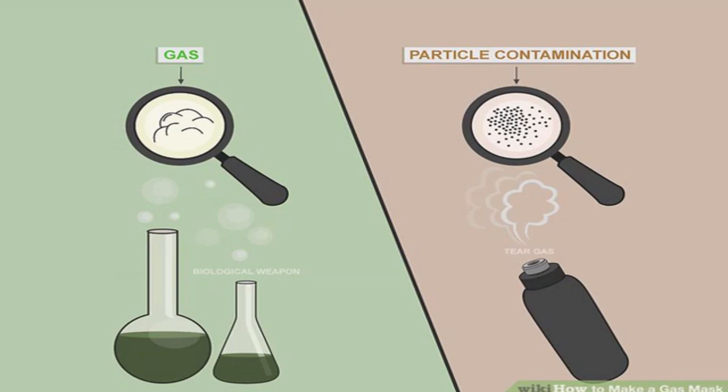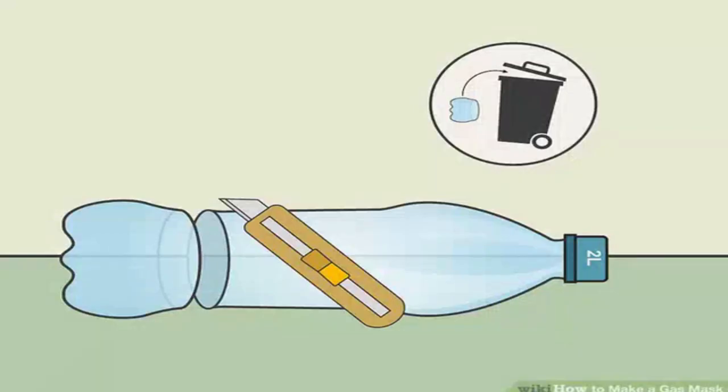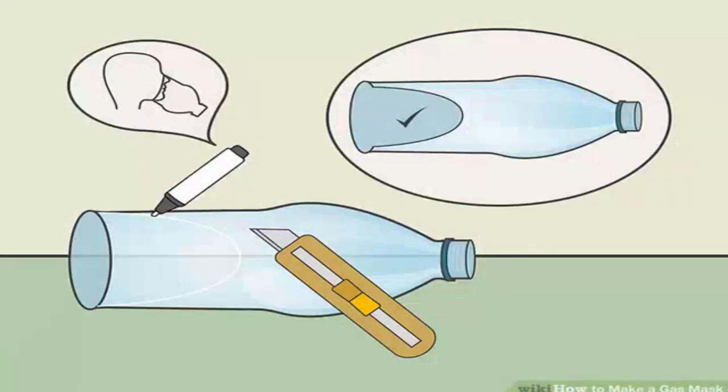Cut the bottom off of a transparent two-liter soda bottle. Using a razor blade, cut the bottom inch off of a large bottle and discard the bottom. Cut a U-shaped opening for your head.